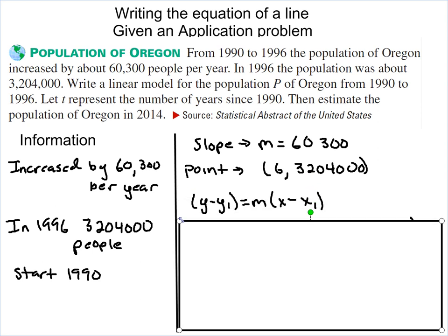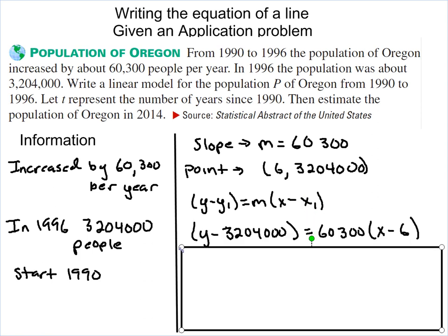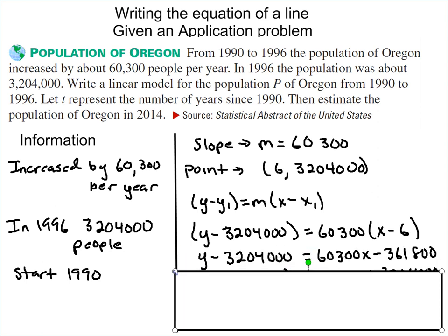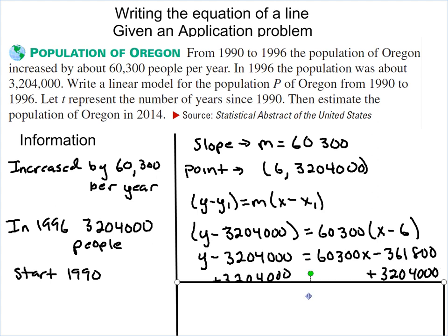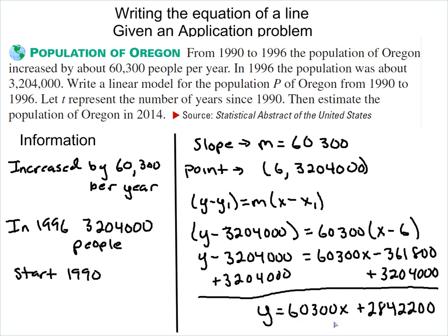We're just going to plug into our point-slope formula. So y minus y₁ equals m times x minus x₁. So we plug in our values, so y minus 3,204,000 equals 60,300 times x minus 6. Distribute the 60,300, and we get 60,300x minus 361,800. Add the 3,204,000 to both sides, and this is our equation. We get y equals 60,300x plus 2,842,200.